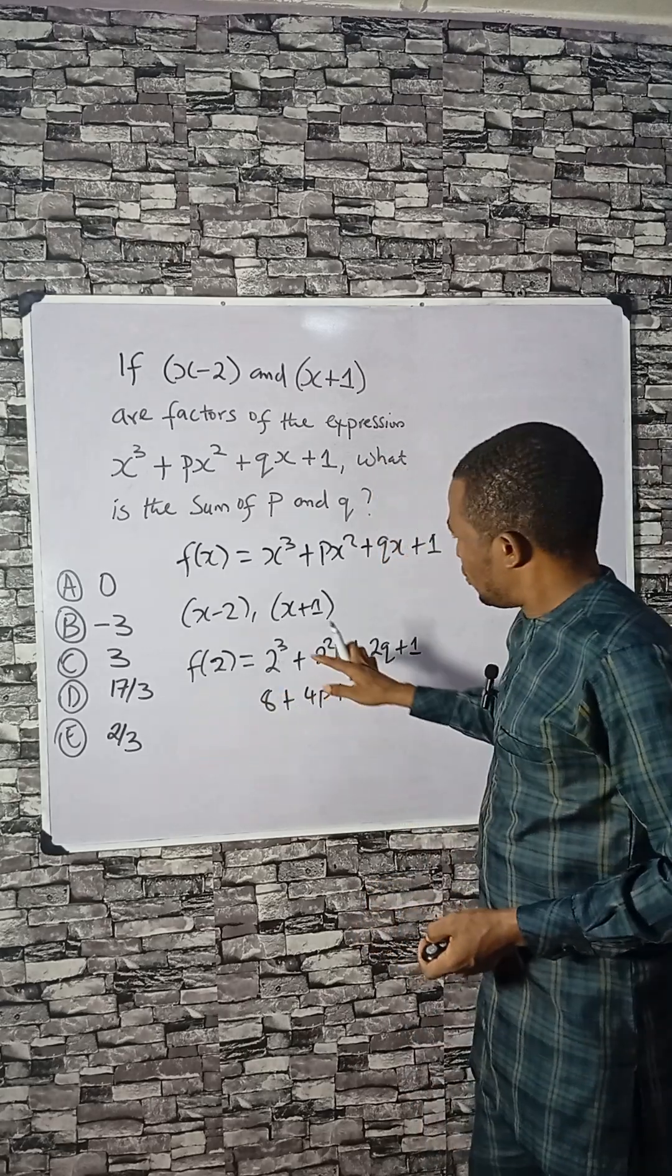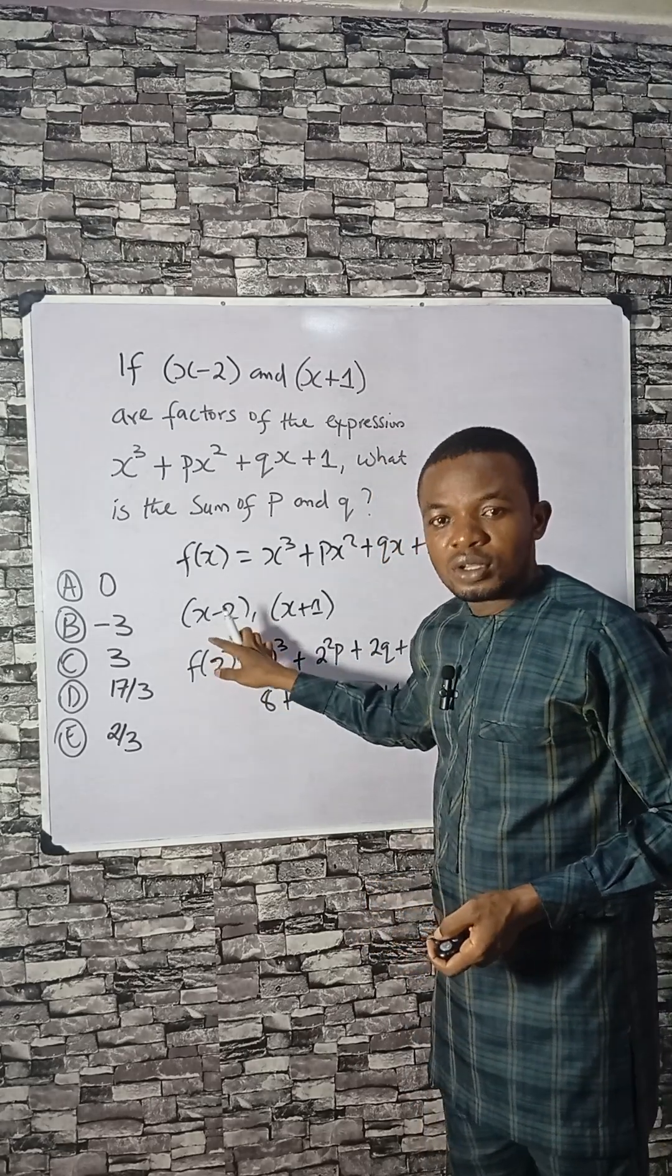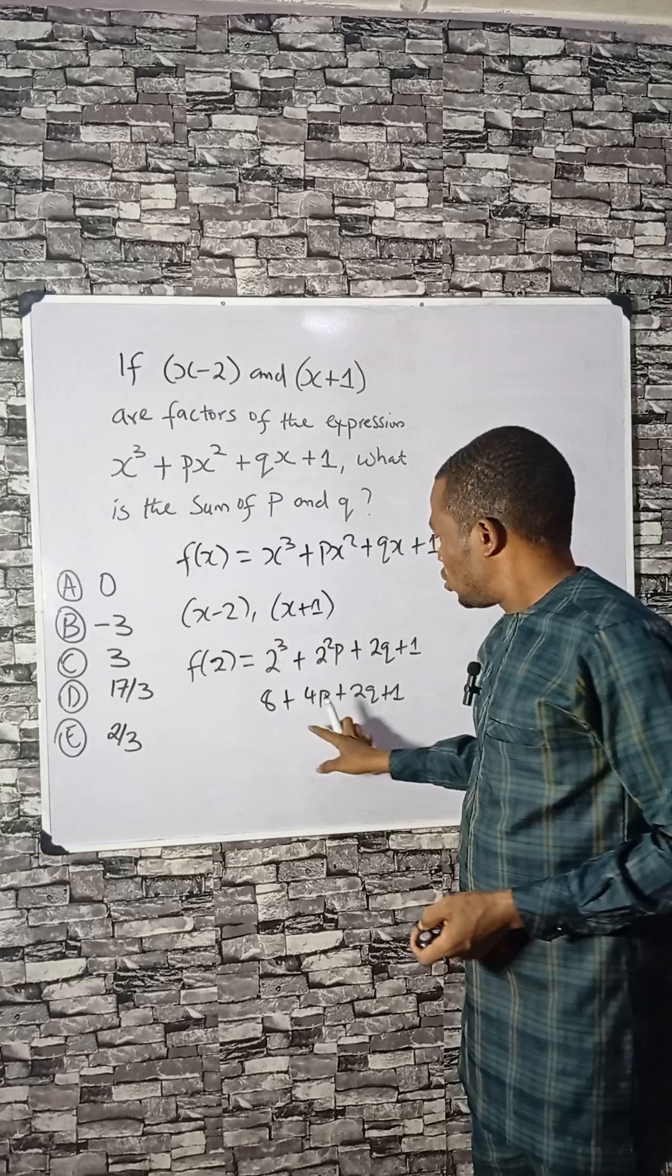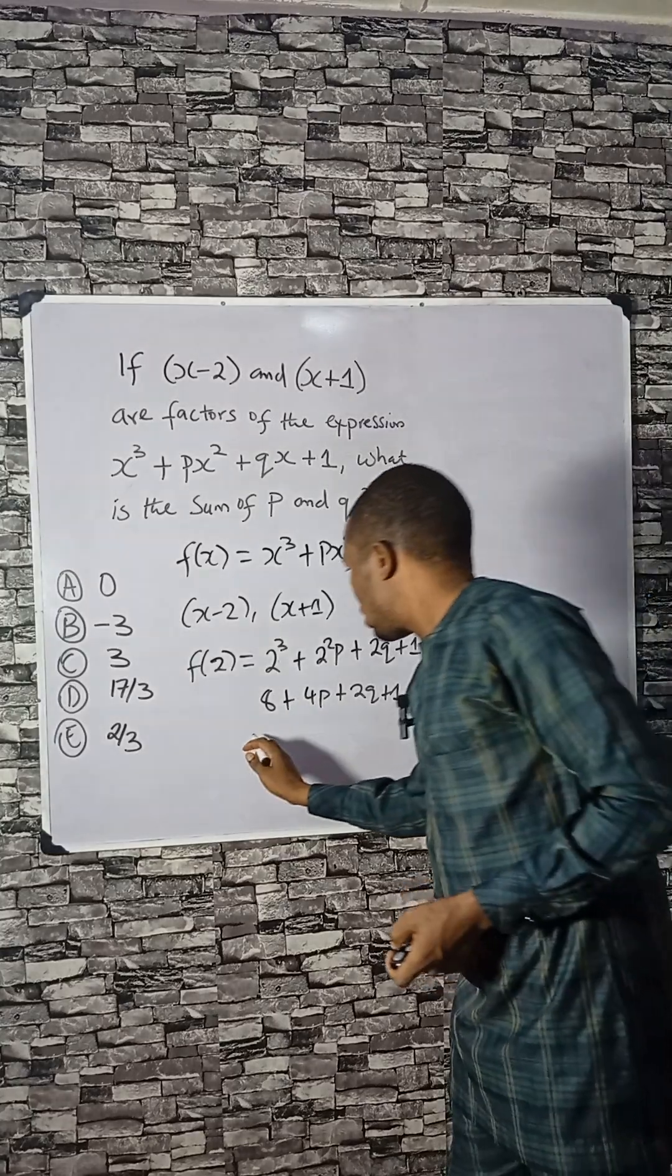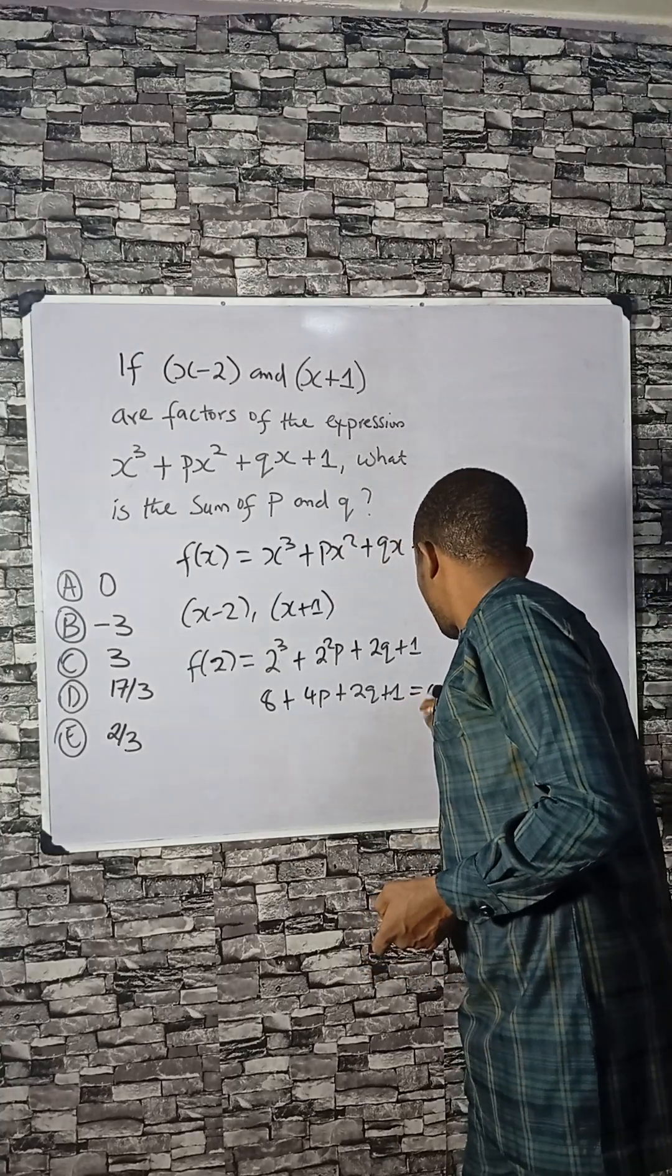Remember that if x minus 2 is a factor of this polynomial, this should be equal to 0.